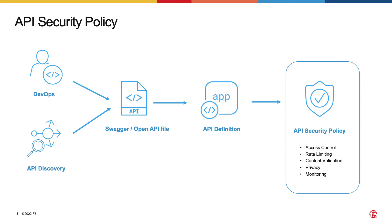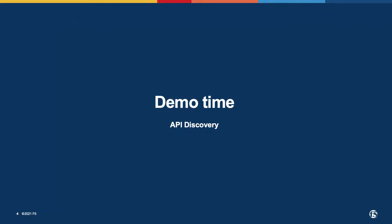The first imperative in API security is therefore knowing all of your API assets, whether they are part of well-regulated processes or they need to be discovered by monitoring live traffic. I will quickly show you how to configure API discovery and its outcome.